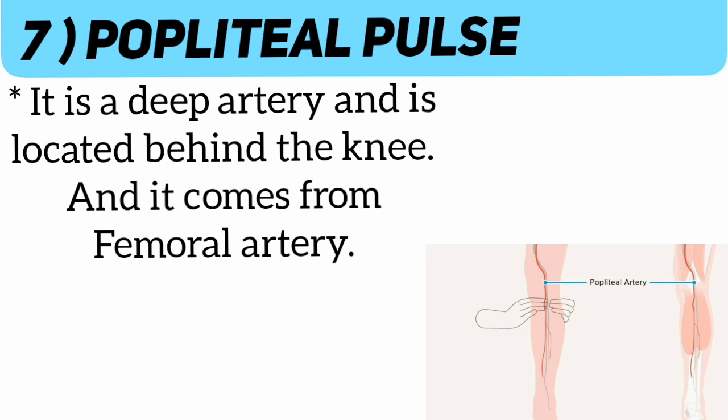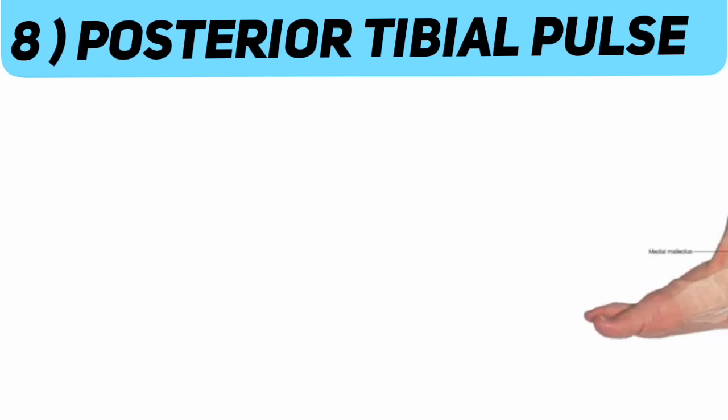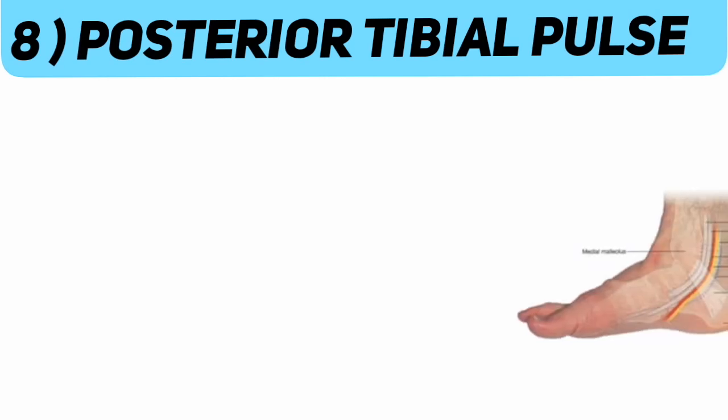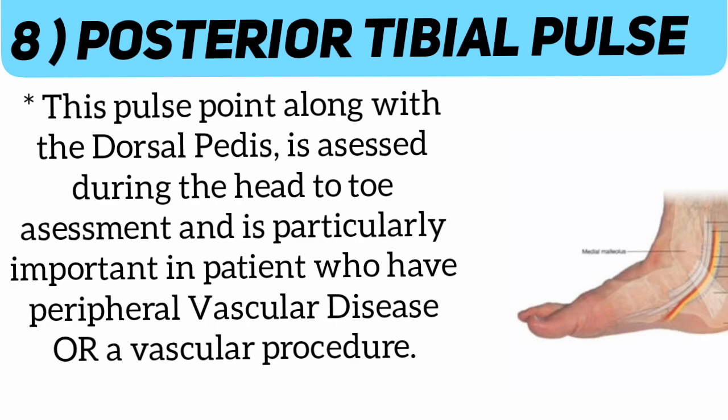Number seven: popliteal pulse. It is a deep artery located behind the knee and comes from the femoral artery.